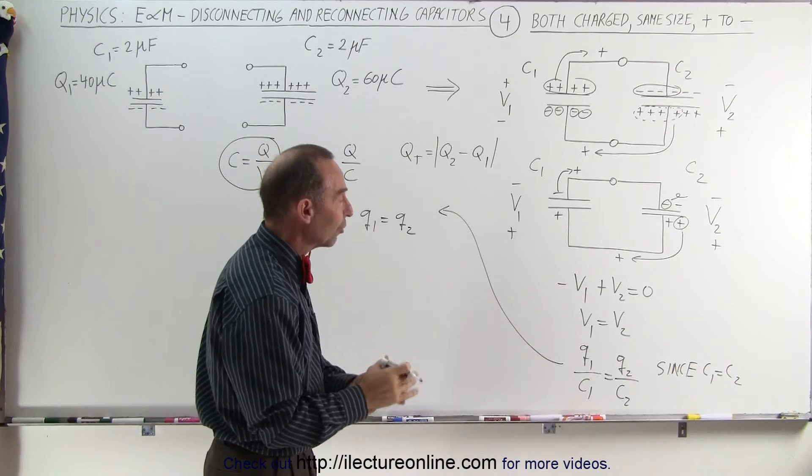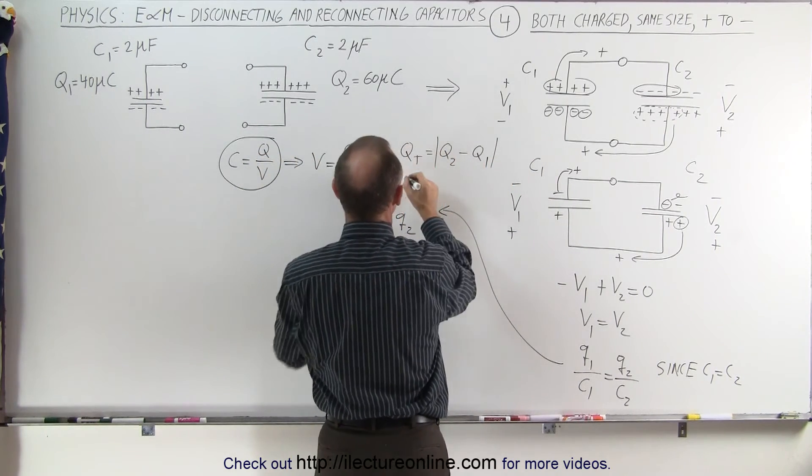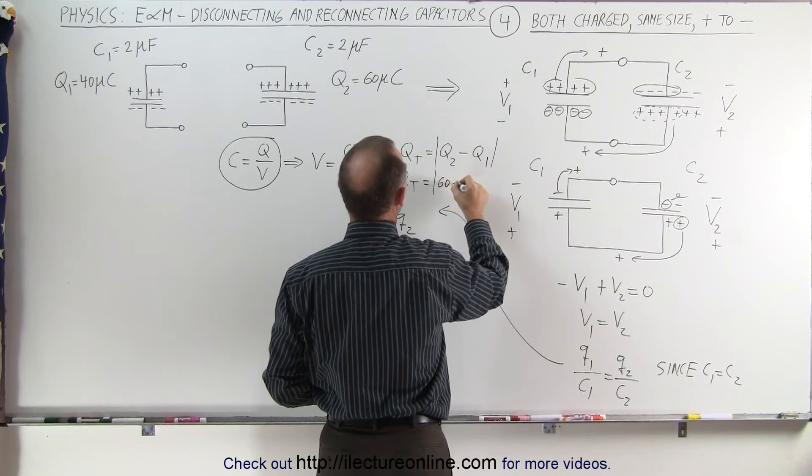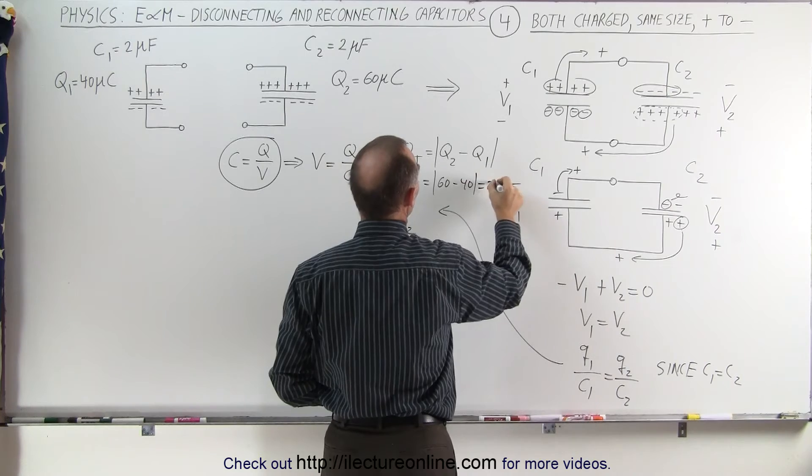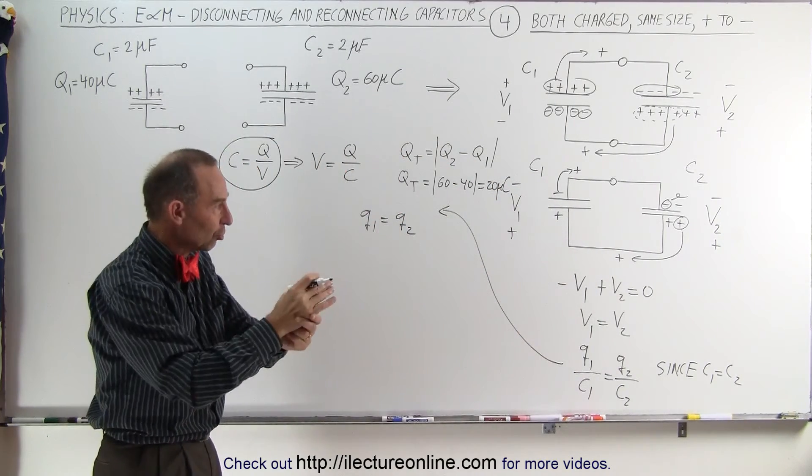That means Q1 equals Q2. We realize that all we have left is the Q total, which in this case is equal to 60 minus 40, which is 20 microcoulombs. That's all we have left after the initial transfer of charge.